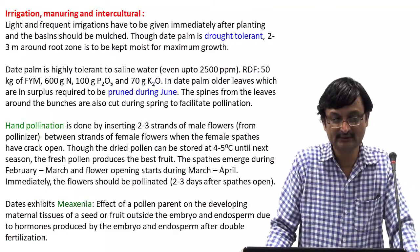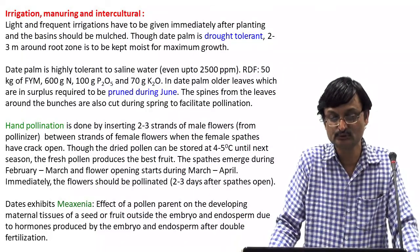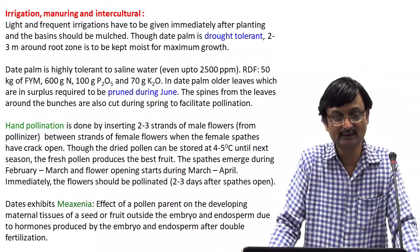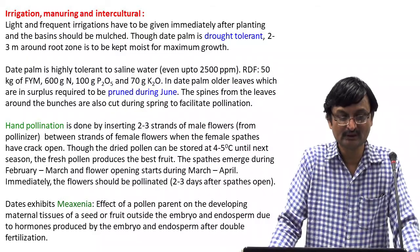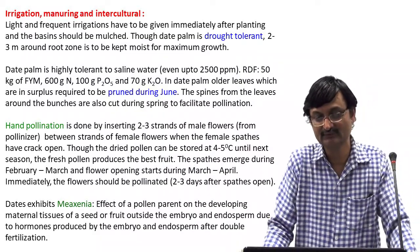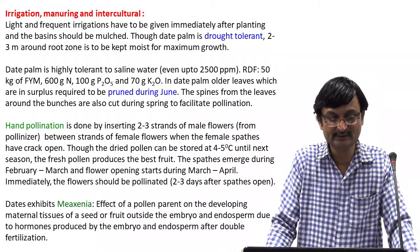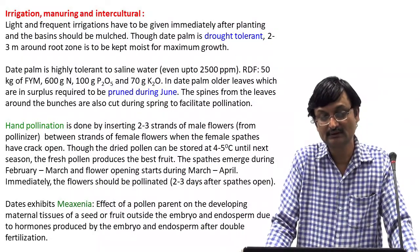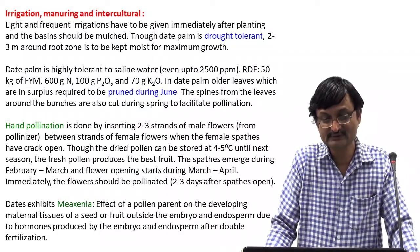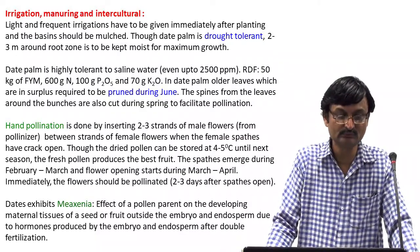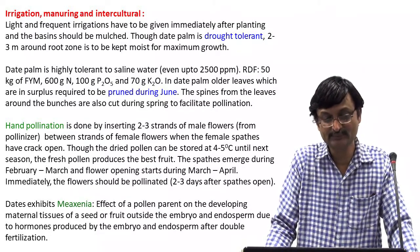Irrigation, manuring and interculture: Light and frequent irrigations have to be given immediately after planting and the basins should be mulched. Although date palm is drought tolerant, 2 to 3 meters around the root zone should be kept mulched for maximum growth. Date palm is highly tolerant to saline water even up to 2500 ppm. Recommended dose of fertilizer: 50 kg of FYM, 600 g nitrogen, 100 g P₂O₅ and 70 g K₂O. Older leaves in surplus are required to be pruned during June, and the spines from leaves around the bunches are also cut during spring to facilitate pollination.